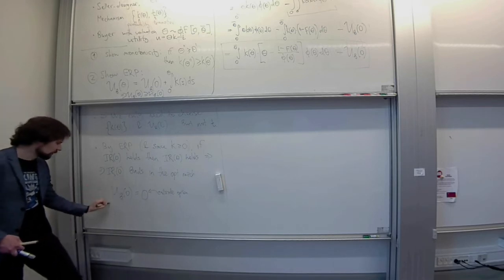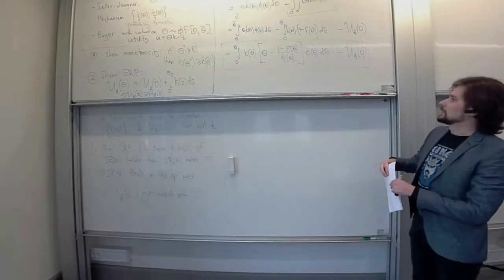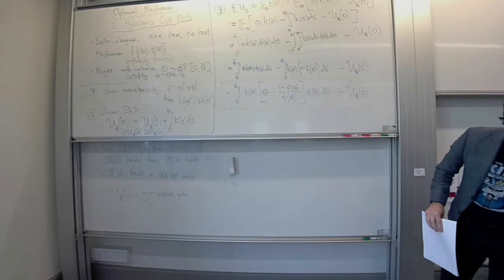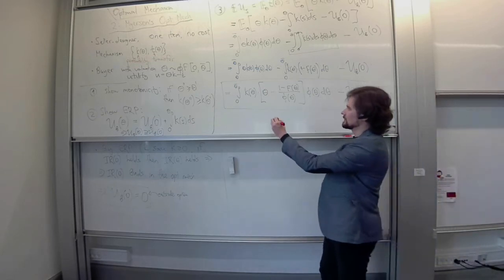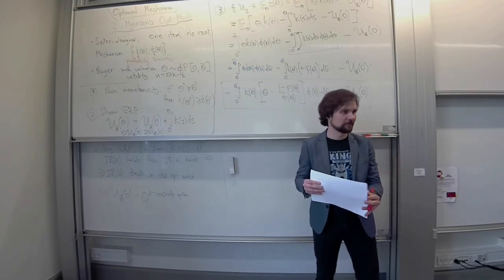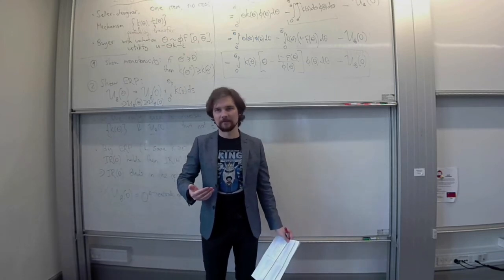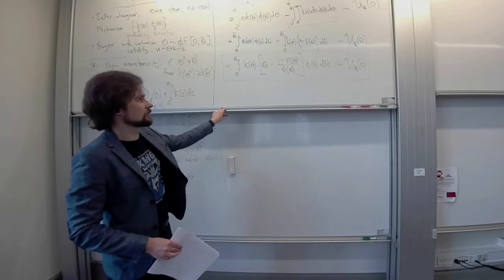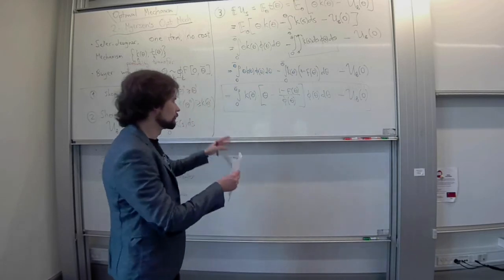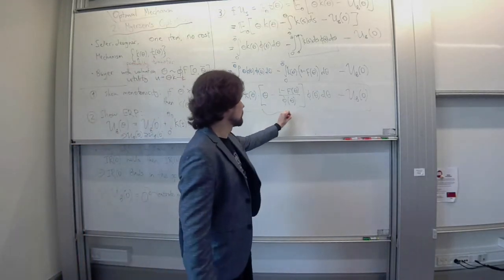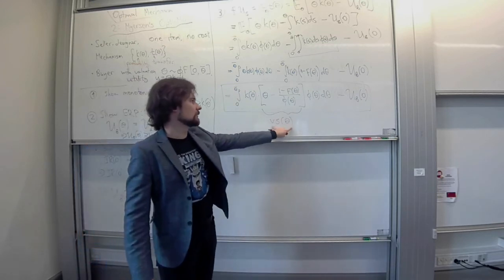Now we just need to find the optimal k(θ). Looking at our expression — integral of [θ − (1 − F(θ))/φ(θ)] · k(θ) · φ(θ) dθ — we can use a greedy pointwise approach: take the first-order condition of this integrand with respect to k(θ) for each θ separately. This gives us a rule that depends on the sign of the term [θ − (1 − F(θ))/φ(θ)], which I'll call virtual surplus.